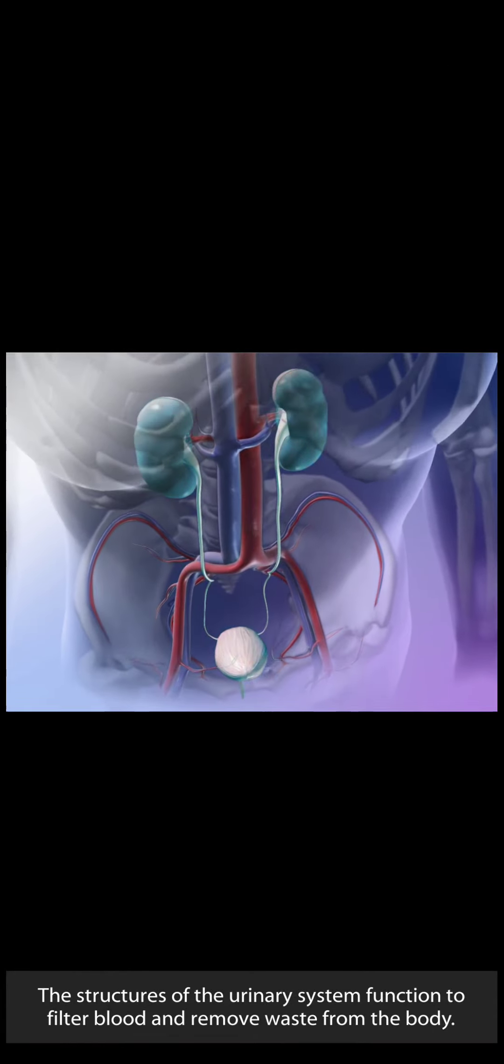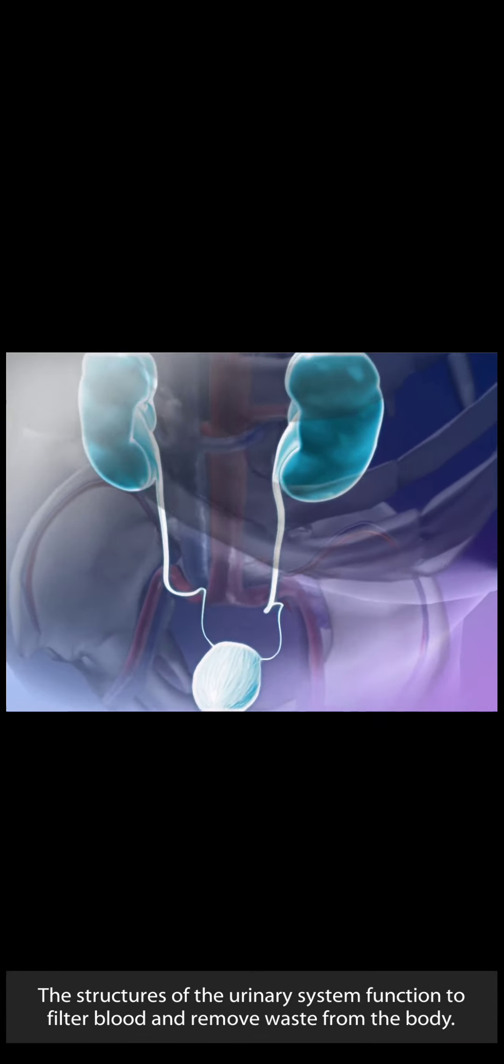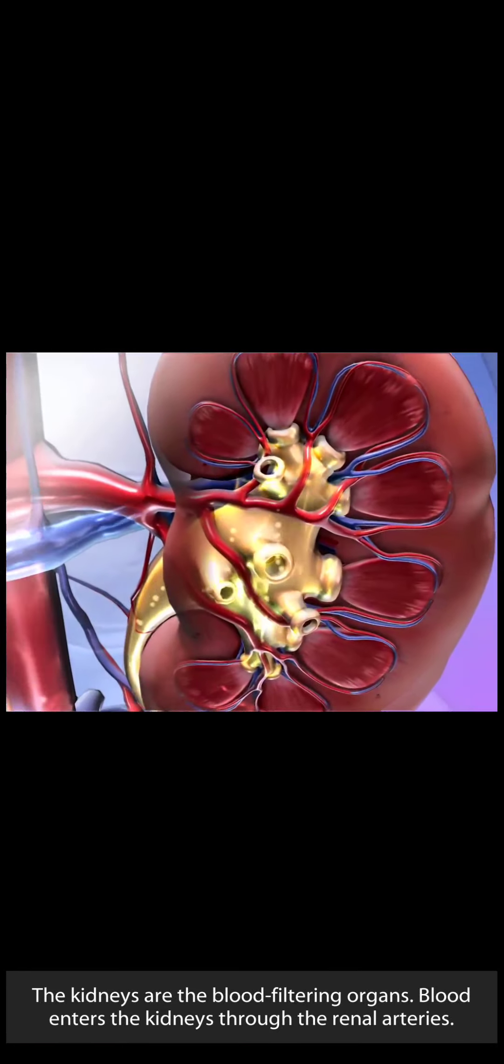The structures of the urinary system function to filter blood and remove waste from the body. The kidneys are the blood-filtering organs.